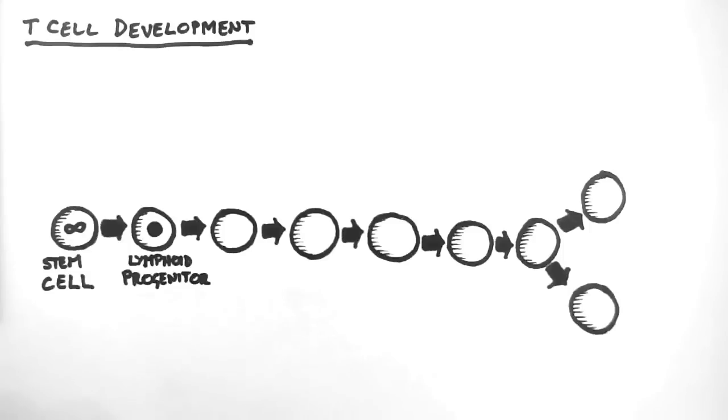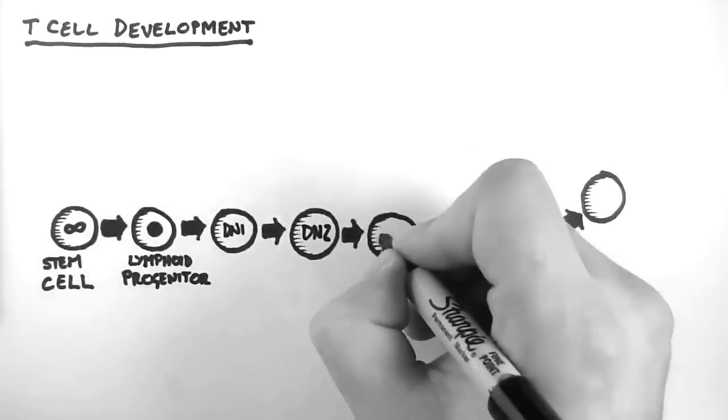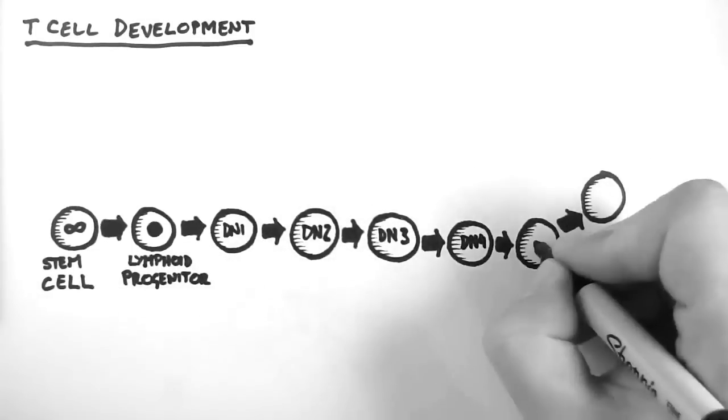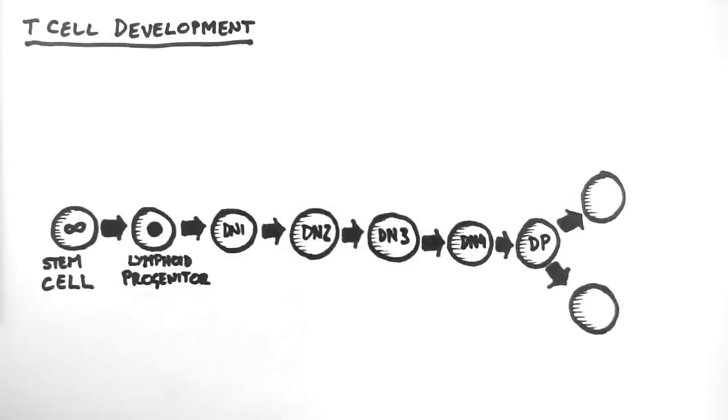The cell then progresses through a series of stages. This begins with double negative 1, also abbreviated DN1. Then it progresses onto DN2, DN3, DN4, and finally onto DP, which stands for double positive. We'll talk more about what double negative and double positive means in just a moment.